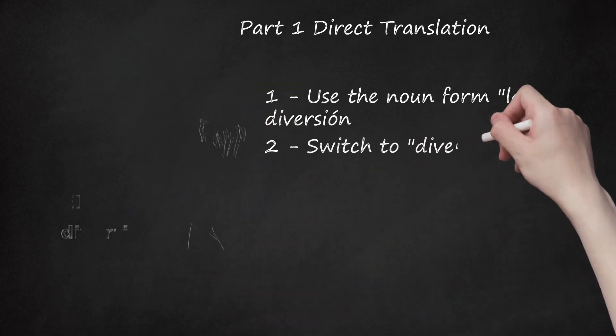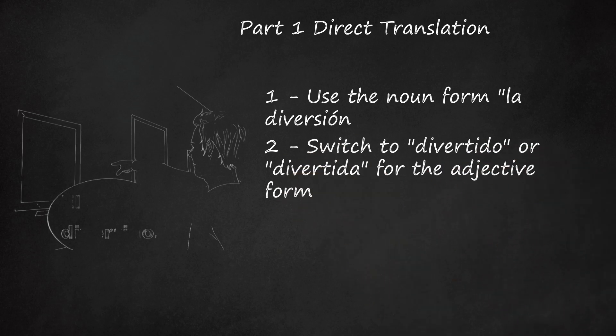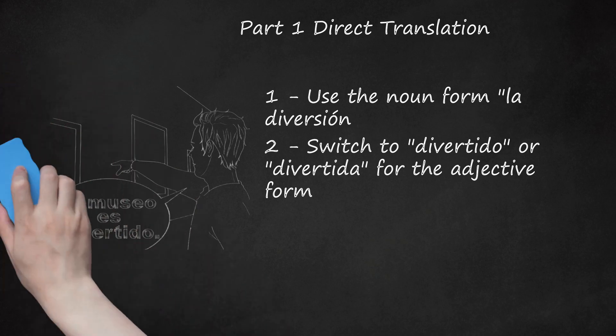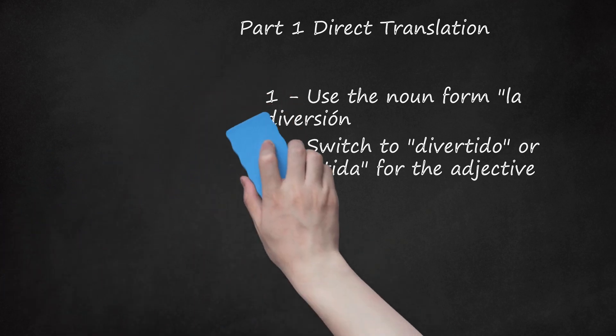2. Switch to 'divertido' or 'divertida' for the adjective form. Use this term when you want to say that something else — a person, place, thing, or idea — is fun. Use 'divertido' when describing a masculine noun and 'divertida' when describing a feminine noun. Pronunciation: di-ver-ti-do or di-ver-ti-da. Example: 'El museo es divertido' — The museum is fun.